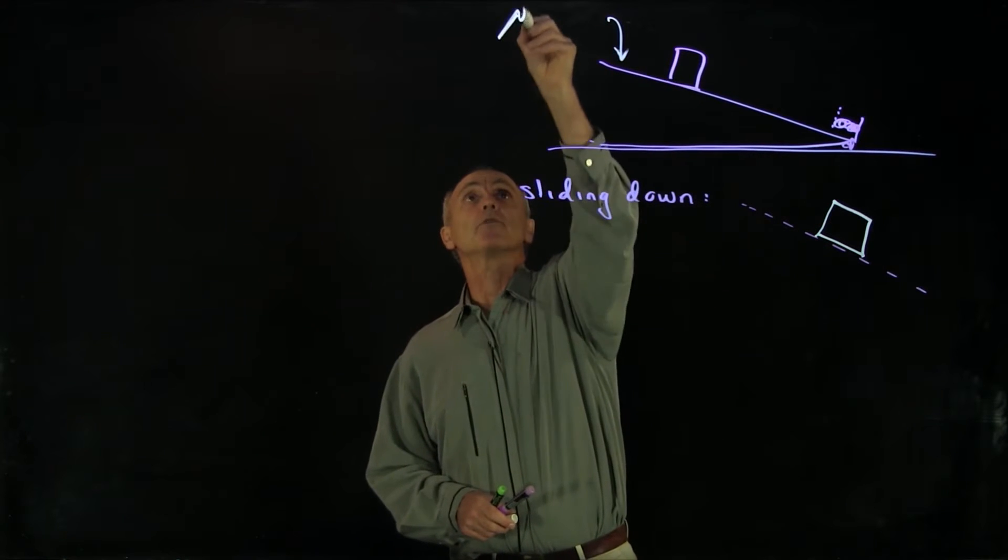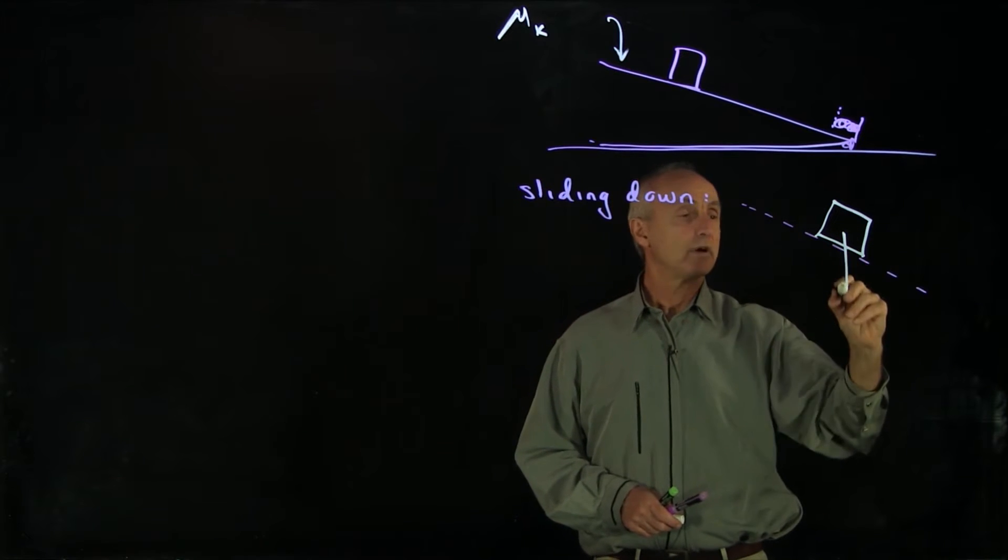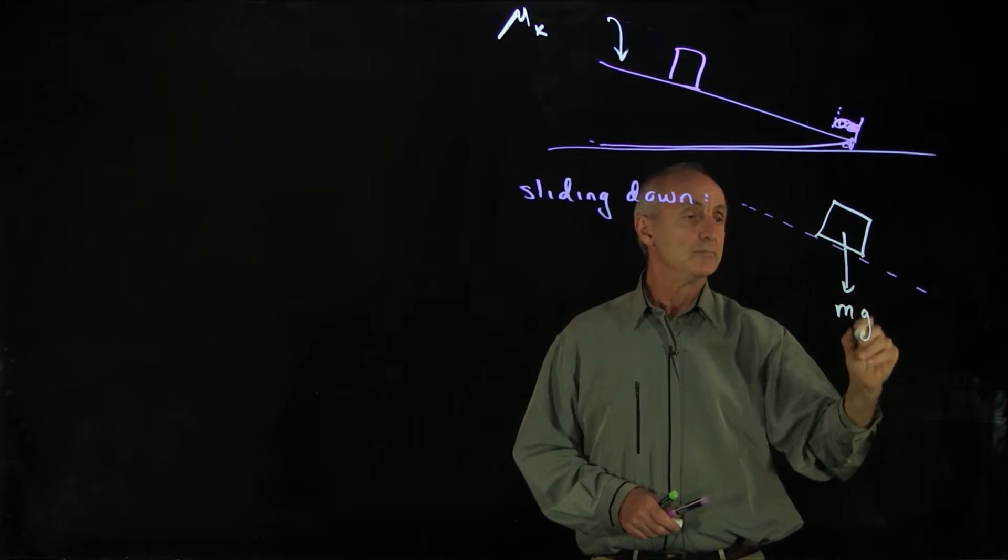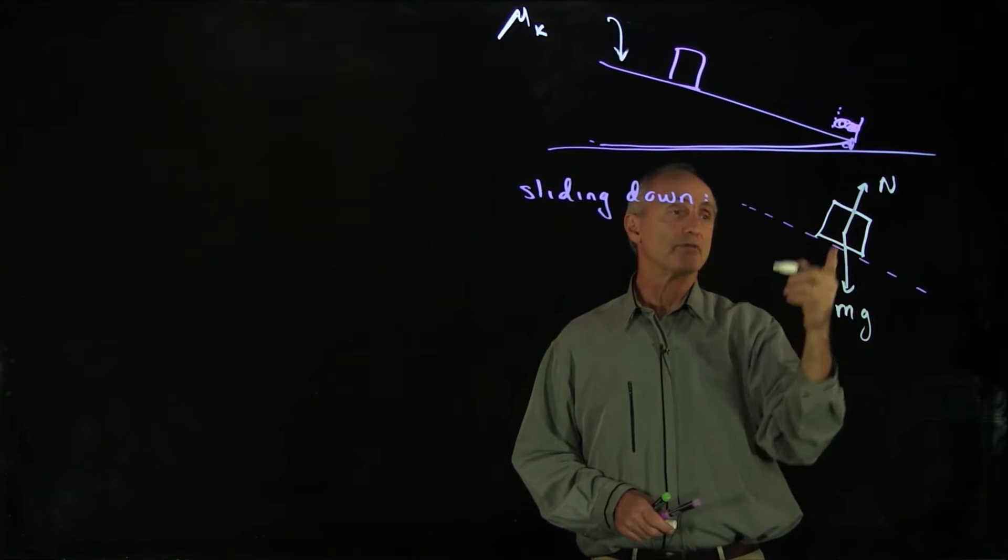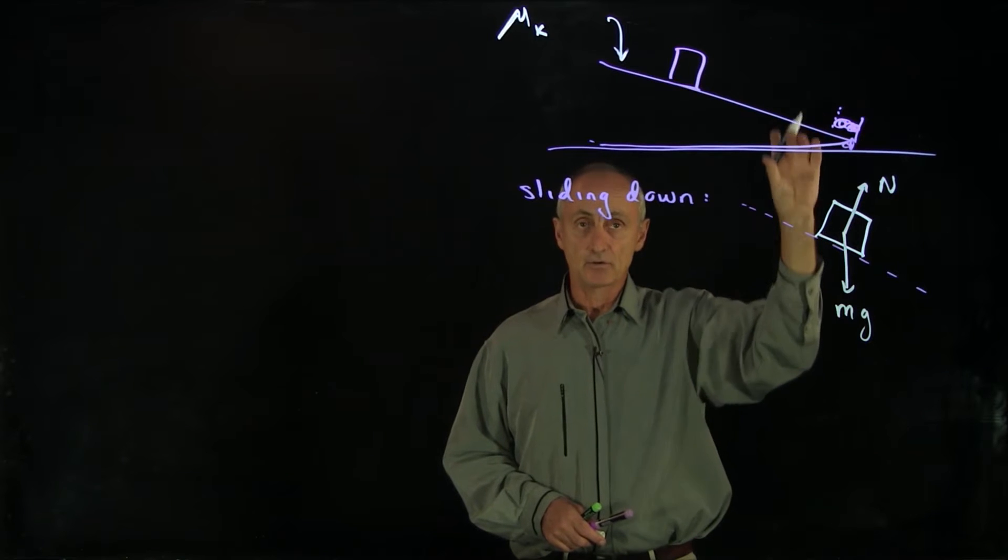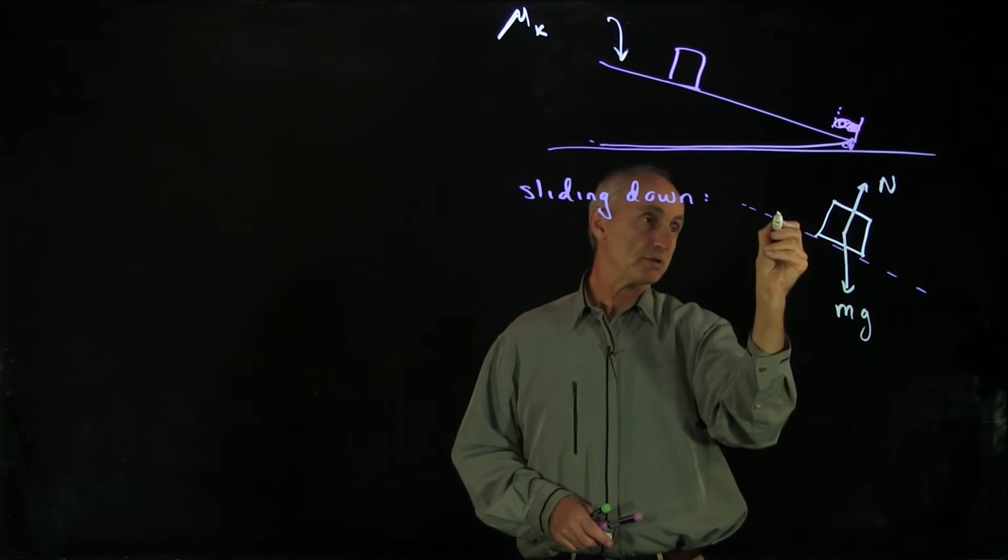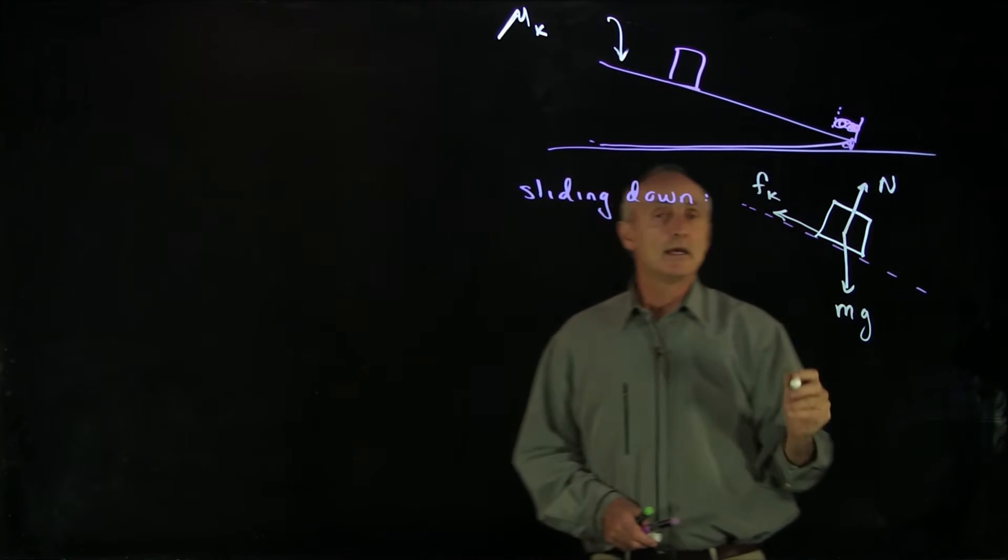There is friction with a coefficient mu k. We have the gravitational force mg, we have a normal force of the surface on the block pointing up, and because the block is sliding down, remember that our friction force is opposing that motion.